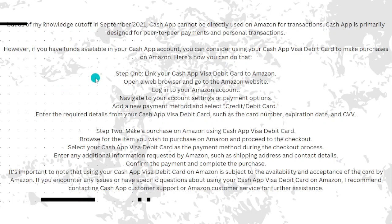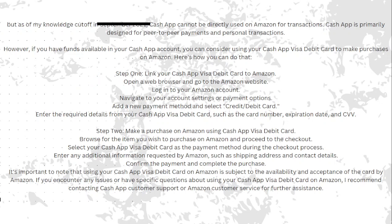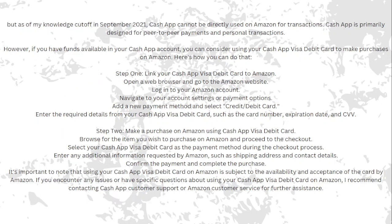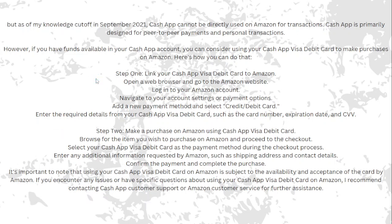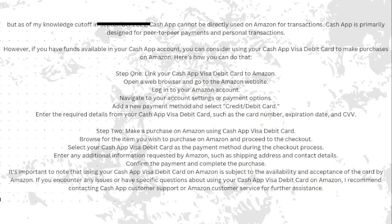Step one is to link your Cash App Visa debit card to Amazon. Open a web browser and go to the Amazon website. Log into your Amazon account and navigate to your account settings or payment options. Add a new payment method, select 'Add a debit or credit card,' and enter the required details from your Cash App Visa debit card, such as the card number, expiration date, and CVV code.